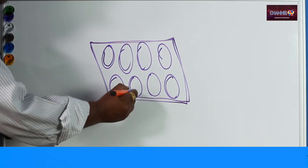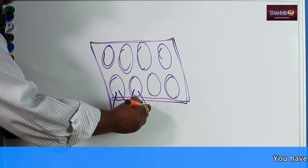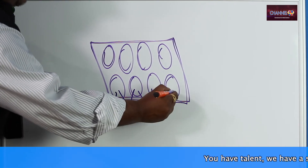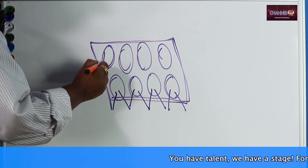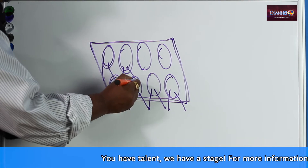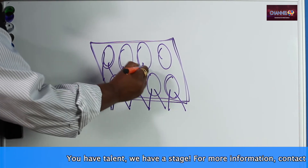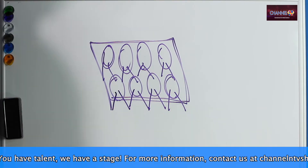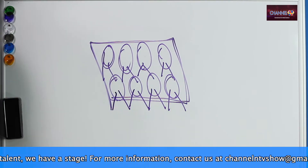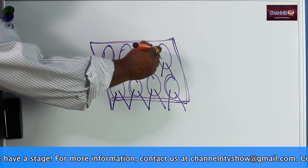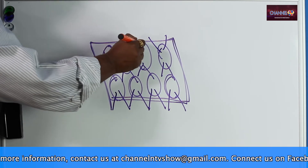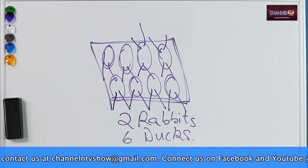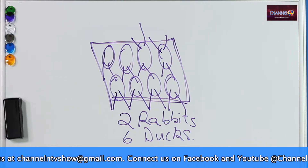Counting out two legs per animal across all eight animals: one through sixteen legs drawn. Four legs remain to be assigned, so counting seventeen, eighteen, nineteen, twenty. Two rabbits and six ducks.